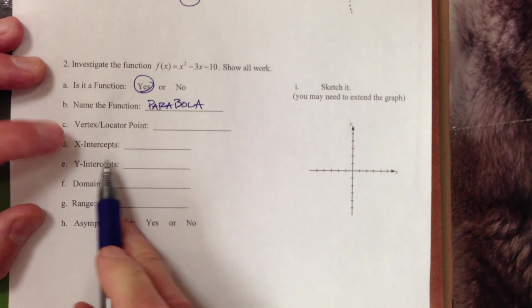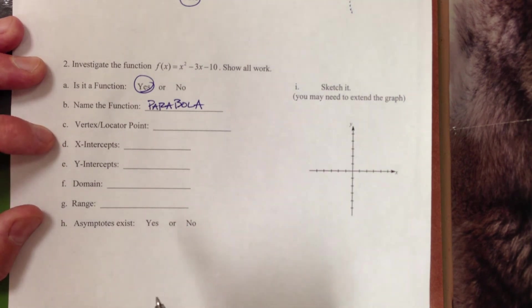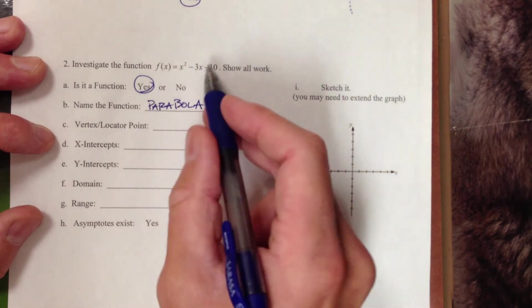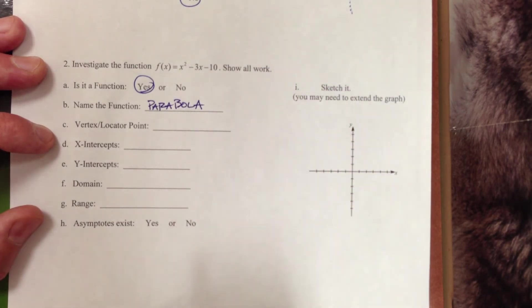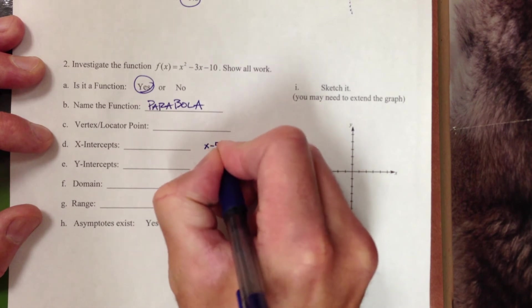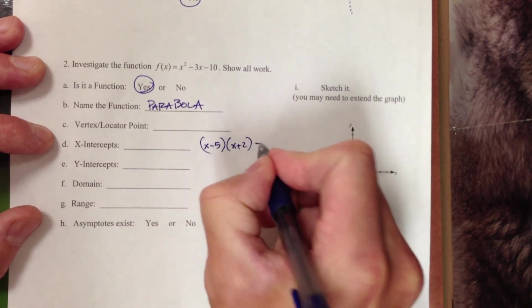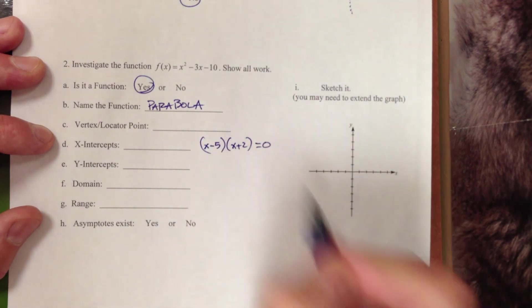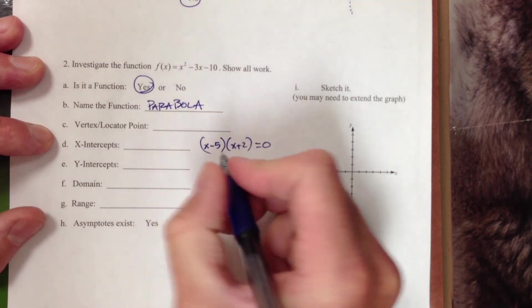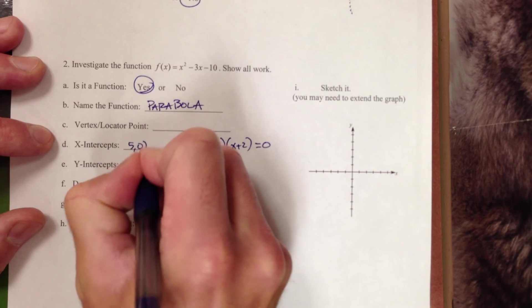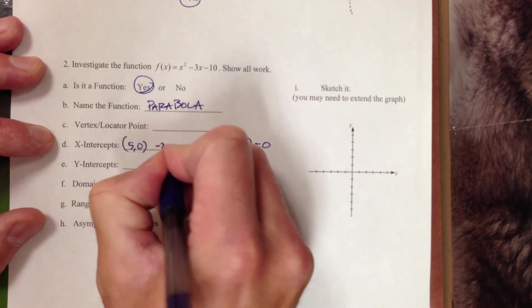Vertex locator point. Let's find my x-intercepts first. Then we can average those two. If you'd like to do negative b over 2a, please feel free to do that. So the factors of negative 10 that give me a negative 3, that would be x minus 5 and x plus 2. Finding x-intercepts, so we get that y value of 0, so we can apply our zero product property. I get 5 comma 0, and I also get negative 2 comma 0.